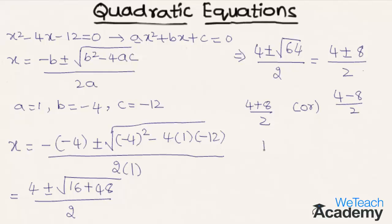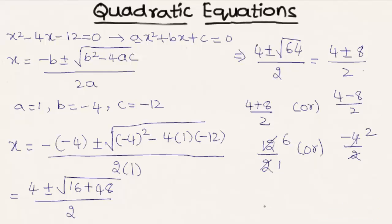This gives us two cases: (4 + 8) / 2 = 12 / 2 = 6, and (4 − 8) / 2 = −4 / 2 = −2. So the values of x are 6 and −2. This is how we solve a quadratic equation using the formula.